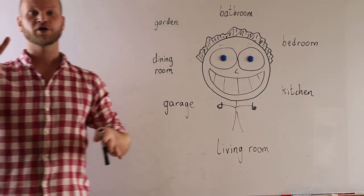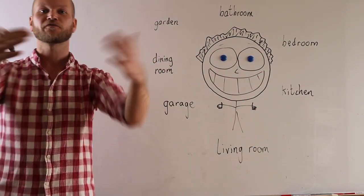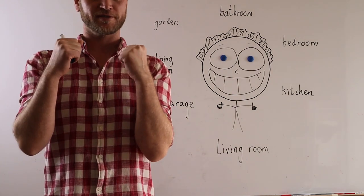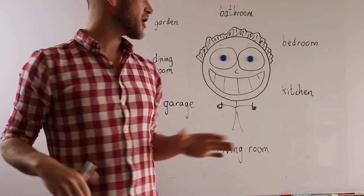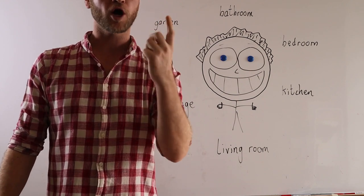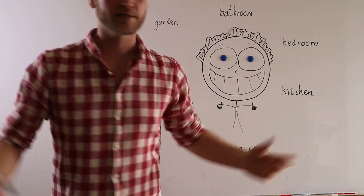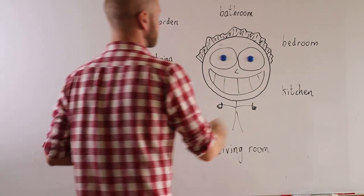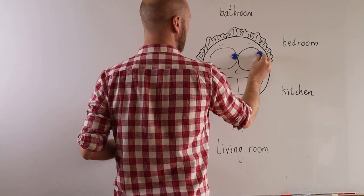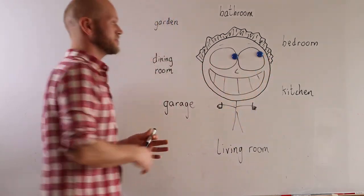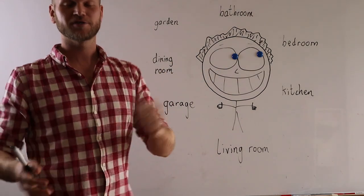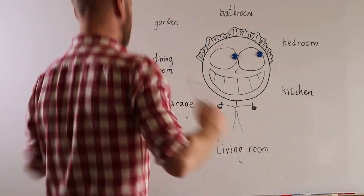Ask two students to come to the front and have their backs turned to the board. When you say three, two, one, 'Where is that?' Bang! They have to turn around. All you do is move the magnets pointing to the board.